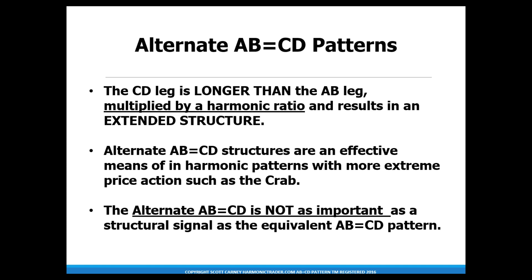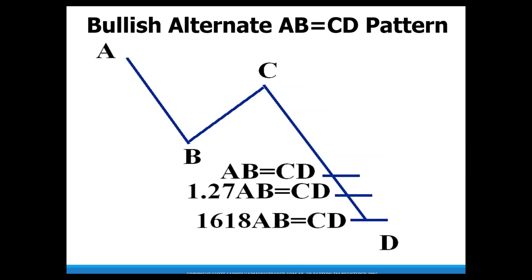The singular alternate AB equals CD is not as important a structural signal as the equivalent basic ABCD, but in specific situations it really complements distinct patterns. The bullish alternate ABCD shows a general formation of an A-to-B segment followed by a B-to-C pullback retracement, then a projection down of the equivalent A-to-B level. If A to B is 10 points, followed by a retracement to C, we project another 10 points down to get the equivalent pattern. The alternate structures usually use a 1.27 or 1.618, where we multiply that AB distance by 1.27 or 1.618 and project it off of that C point.